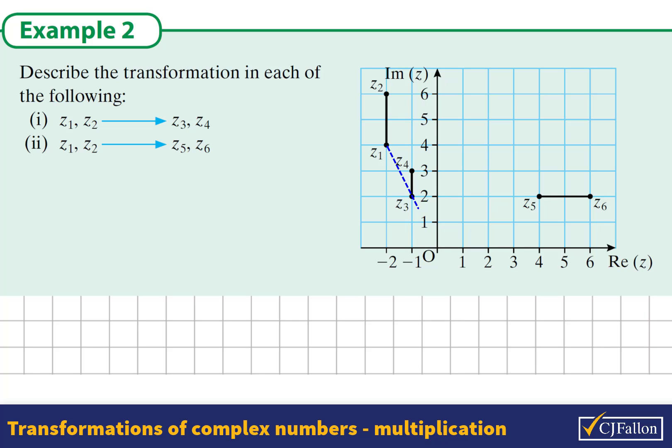We're asked to find what transformation would map Z1 and Z2 onto Z3 and Z4. If Z1 is mapped onto Z3, we notice that Z1 and Z3 have the same argument. They're in the same line when we join them to the origin. Also, Z2 and Z4 have the same argument. So there is no rotation as Z1 maps to Z3 or as Z2 maps to Z4.